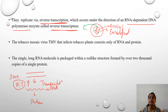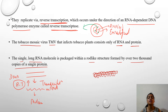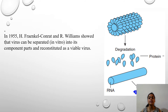TMV — the tobacco mosaic virus — is a virus which has single-stranded RNA and contains only proteins. It has a single long RNA molecule packed within a rod-like structure formed by over 2,000 copies of a single protein. There is a single rod-shaped RNA surrounded by helical-shaped thousands of proteins. The internal rod-shaped structure is the genetic material — the single-stranded RNA.